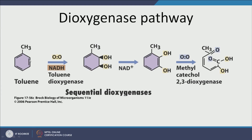Now let us look at the dioxygenase pathway. Starting with toluene, because it is a dioxygenase, one bond breaks and one oxygen attaches to each carbon. This intermediate rearranges to form a diol, and then the enzyme methyl catechol 2,3-dioxygenase acts on it. Because it is 2,3-dioxygenase, the bond breaks there and the ring is cleaved. Once the ring is cleaved, aromaticity is lost and the compound is very easy to degrade.